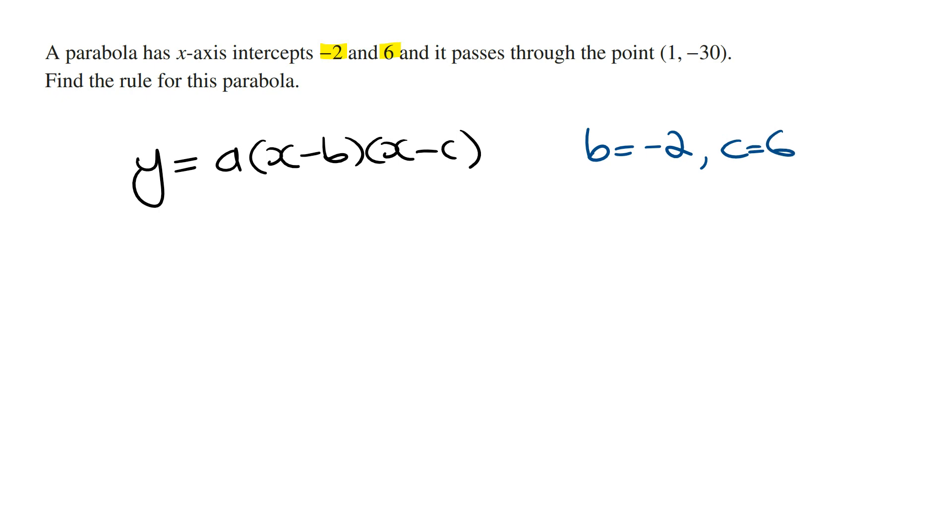And so subbing this into the rule, we're going to get y = a(x - (-2))(x - 6). Cleaning this up, this is going to be a(x + 2)(x - 6).